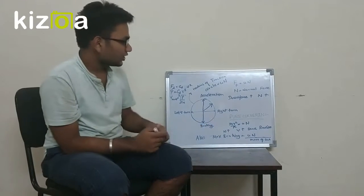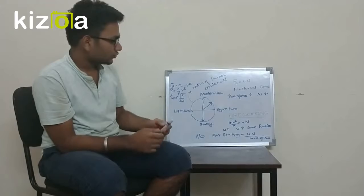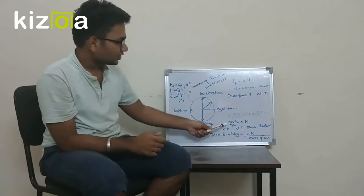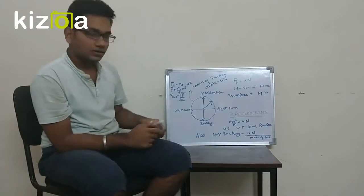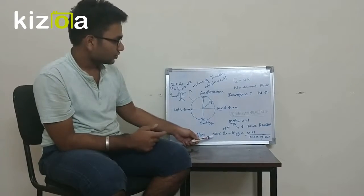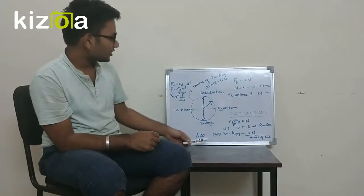For the same radius of cornering, higher the friction force, higher the speed at which we can corner. Similarly, more the friction force, we can reduce the speed of a car in much less time.